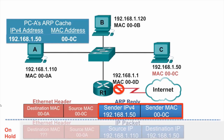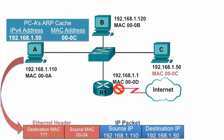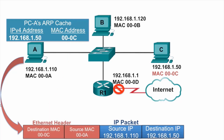PCA can now take the packet — the original packet destined for PCC — take that packet off hold, and has the information it needs to send that packet to PCC. It takes the information from the ARP cache, the MAC address, and adds that to the Ethernet header as the destination MAC address.